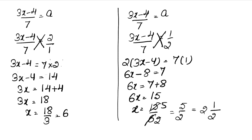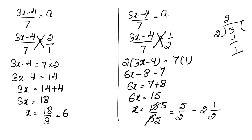Simplifying 15/6: dividing both by 3 gives x = 5/2. You can also write this as the mixed fraction 2 and 1/2. So our final answers for question 58 are x = 6 and x = 5/2, which is the same as 2½.